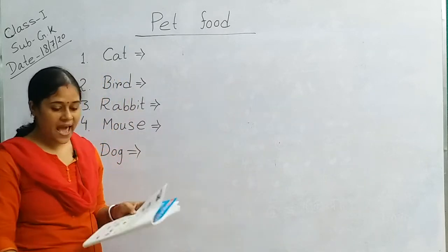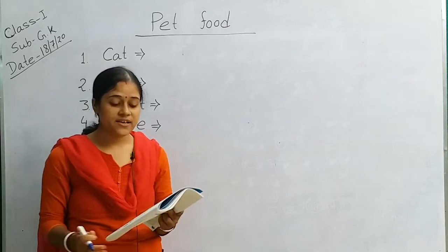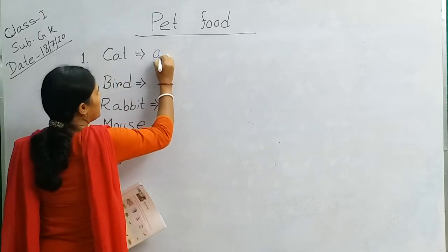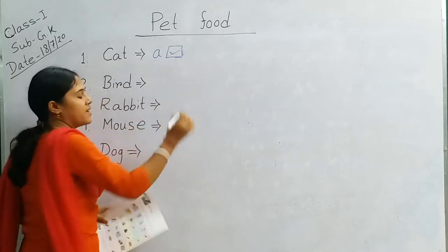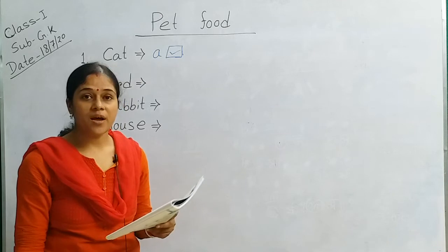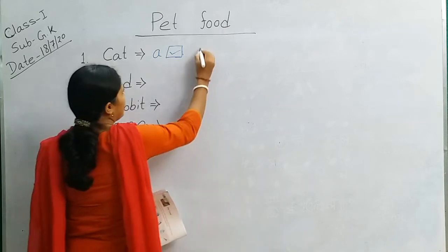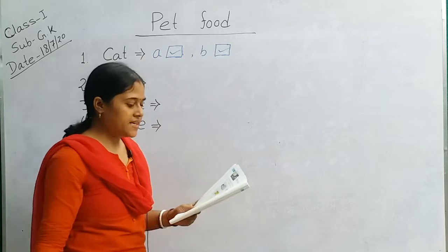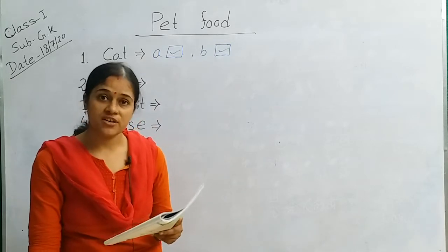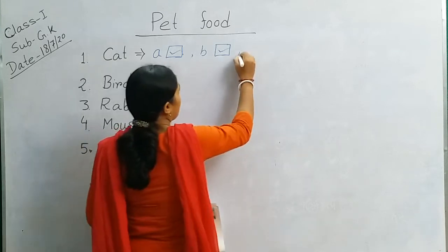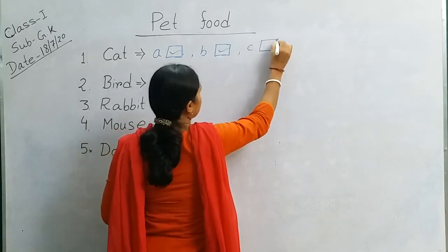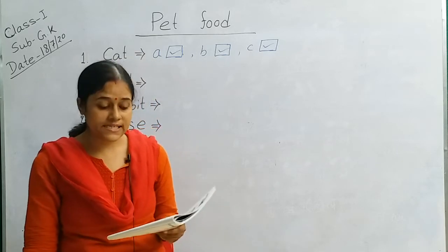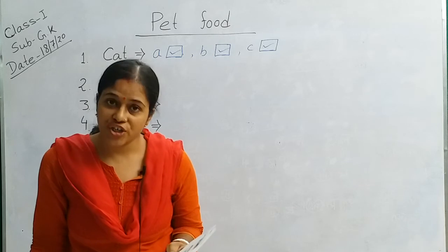Number 1, picture of a cat. Cat eats number 1 A is milk, so tick here, tick A. Number B, the picture of a mouse, tick here. And next fish, number C is fish. Cat eats fish, so number C tick mark. Cat eats carrots? No. Cat eats milk, mouse, fish.